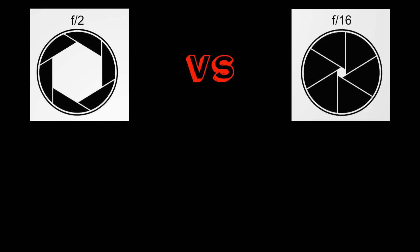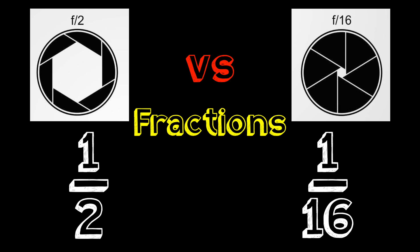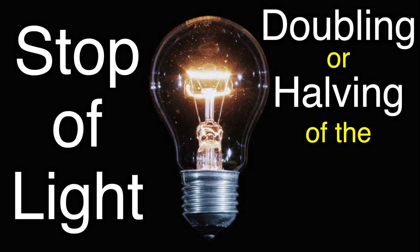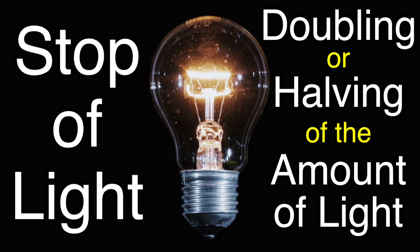To help you understand this, just think about aperture as a fraction. If you're looking at F2 versus F16 in fraction form by replacing the F with a one, you'll be able to see that 1/2 is a much bigger number than 1/16, and therefore represents a much larger opening in your camera lens. Remembering that a stop of light is any doubling or halving of the amount of light let in when taking a photo or video, you can know exactly how any change in aperture is going to affect your exposure. However, unlike shutter speed and ISO, you can't simply double or half your current aperture number in order to figure out those changes.